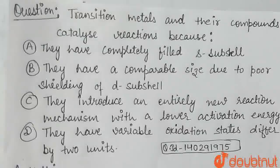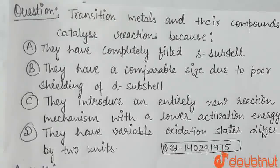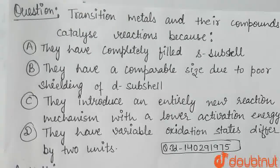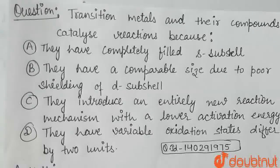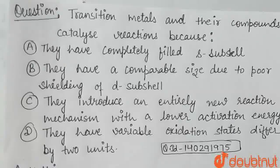Hello friends, the question is: Transition metals and their compounds catalyze reactions because — (A) they have completely filled S-subshell, (B) they have comparable size due to poor shielding of D-subshell, (C) they introduce an entirely new reaction mechanism with a lower activation energy, (D) they have variable oxidation state differing by 2 units.